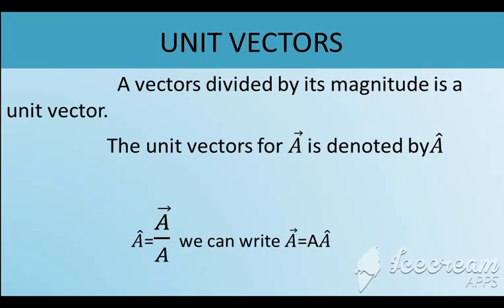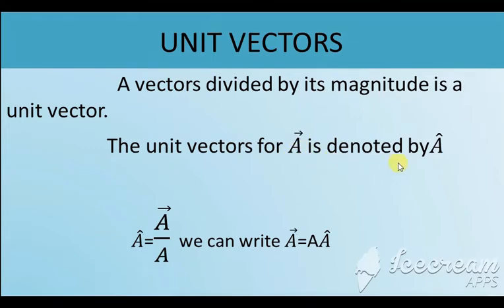Next is unit vectors. What is a unit vector? The term itself defines it — 'unit' means the value is equal to 1. If the value is equal to 1, then that is said to be a unit vector. The vector divided by its magnitude is a unit vector. If you are denoting a vector as A, then the unit vector is denoted by the letter A-cap.